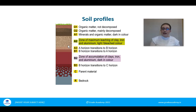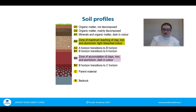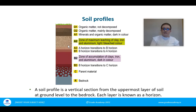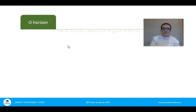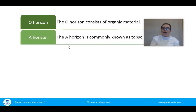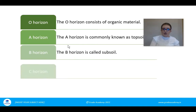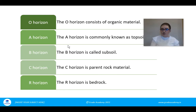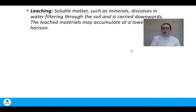It's important to bring colours into your ag science exam because you may have to draw soil profiles, and examiners look for the different colours. To summarise: a soil profile is a vertical section from the uppermost layer to the bedrock. The O horizon is organic material, A is topsoil, B is subsoil, C is parent material, and R is bedrock.